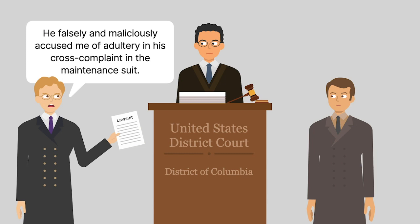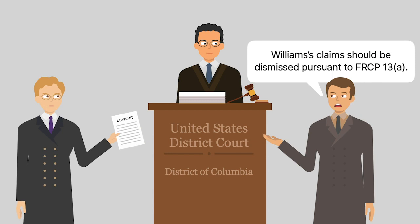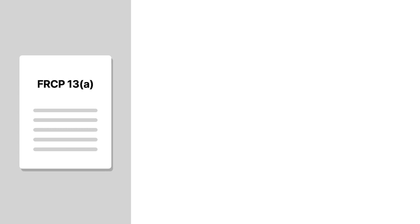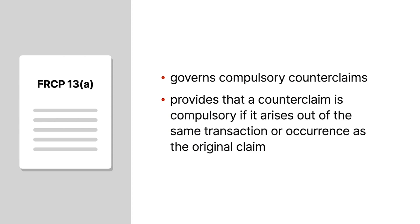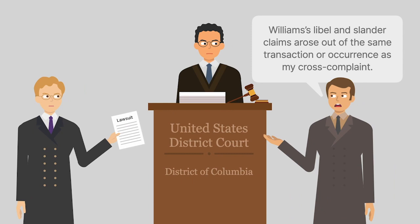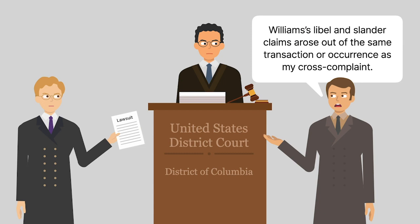Robinson asserted that Williams' claims should be dismissed pursuant to Federal Rule of Civil Procedure 13A. That rule governs compulsory counterclaims and provides that a counterclaim is compulsory if it arises out of the same transaction or occurrence as the original claim. Robinson asserted that Williams' libel and slander claims arose out of the same transaction or occurrence as Robinson's cross-complaint. Because Williams brought his libel and slander claims in a separate lawsuit rather than asserting them as counterclaims, Robinson argued that Williams had forfeited his right to bring them. Accordingly, Robinson moved to dismiss Williams' case.